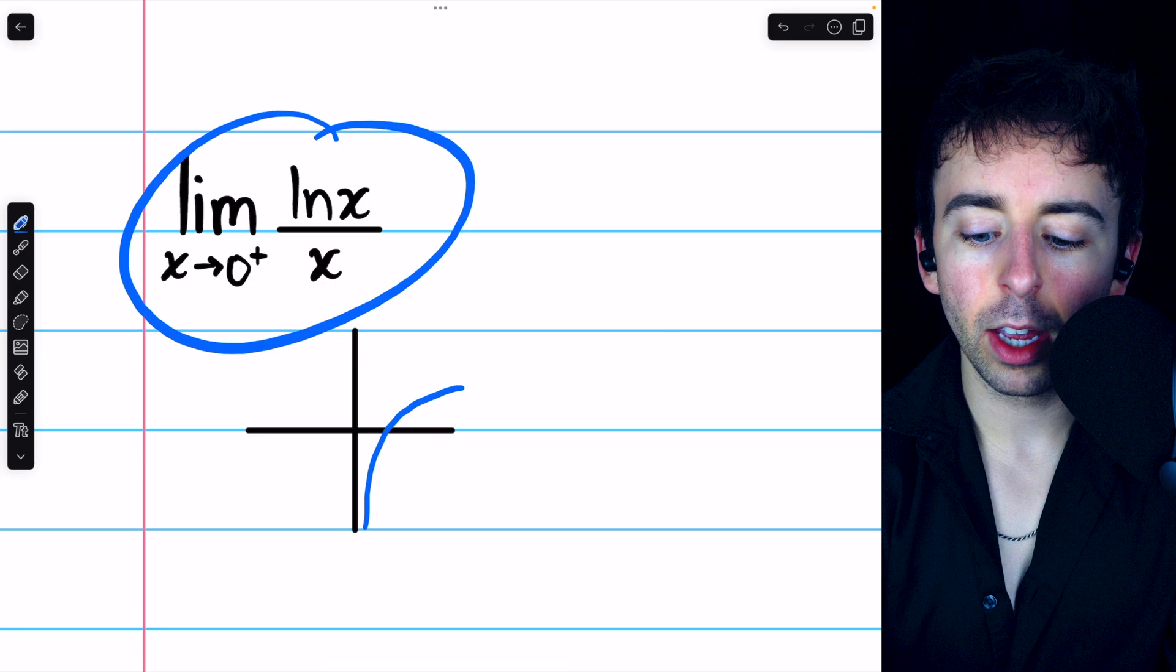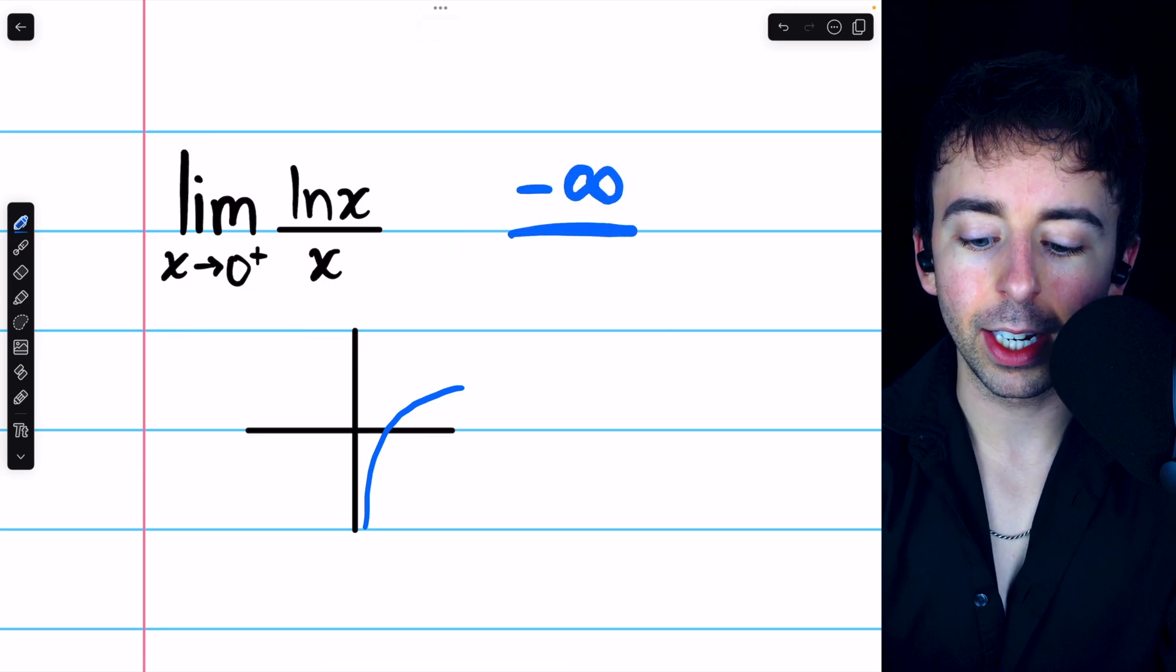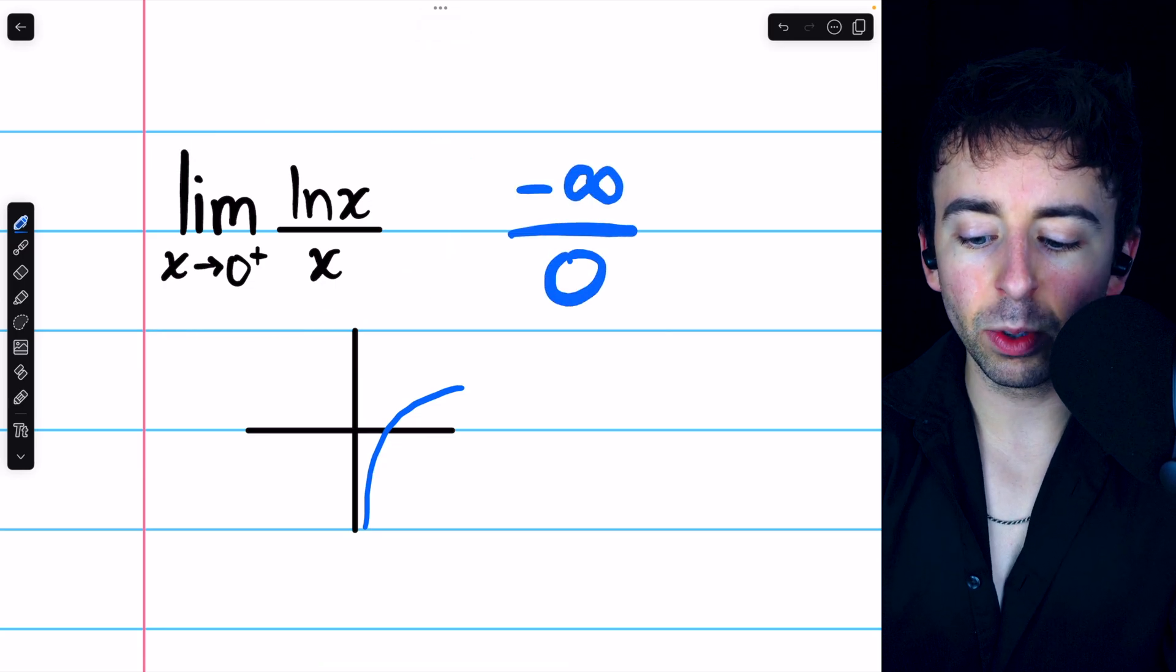When we think about this limit, we're thinking about ln x, which goes to negative infinity, divided by x, which is going to 0.